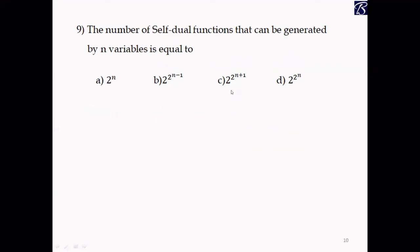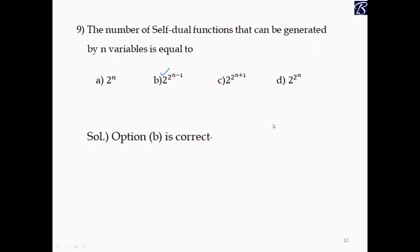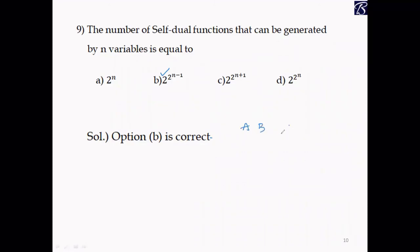Problem 9: The number of self-dual functions that can be generated by n variables is 2^(2^(n−1)). Option B is correct. Taking the same example with n = 2: 2^(2^(2−1)) = 2^(2^1) = 2^2 = 4 self-dual functions can be generated by two variables.